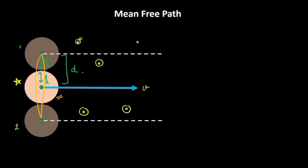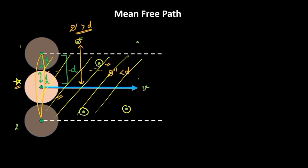For a molecule whose separation from the star molecule is greater than d — say d-dash, where d-dash is greater than d — the collision would be avoided. But for a molecule where the separation d-double-dash is less than d, as you can see geometrically, the collision occurs. In a nutshell, all gas molecules lying in this cylindrical region would be the ones colliding with our star molecule. Note that we have made a big assumption that all other molecules are not moving, so only the star molecule is moving with velocity V while the others are at rest.